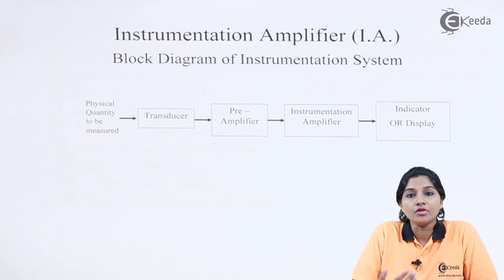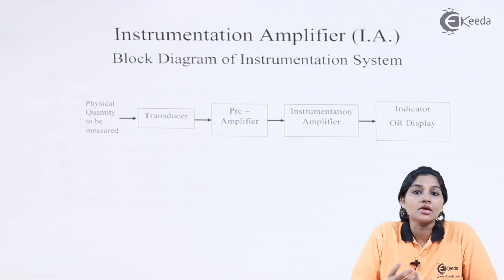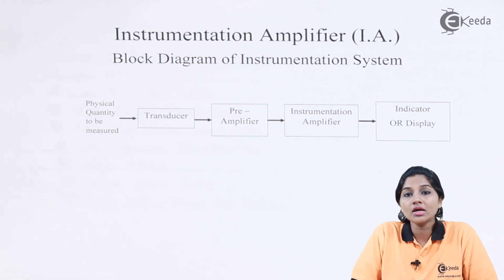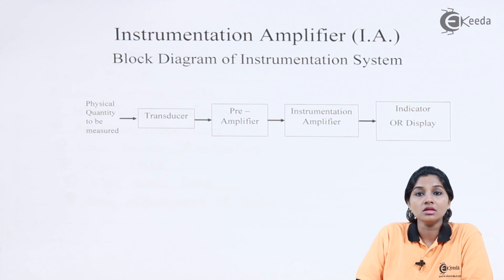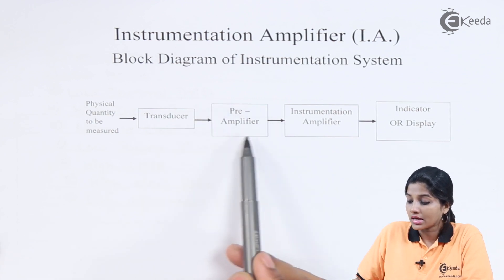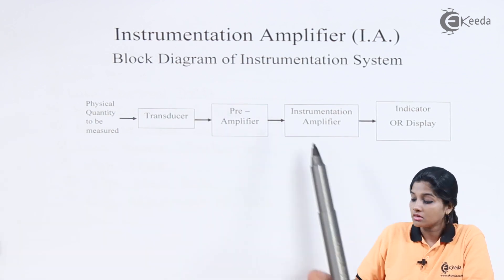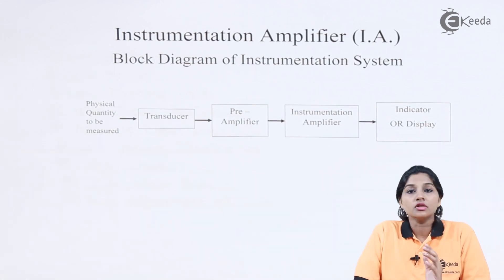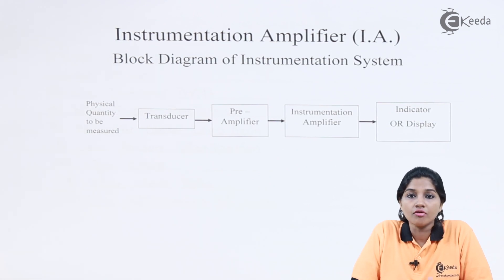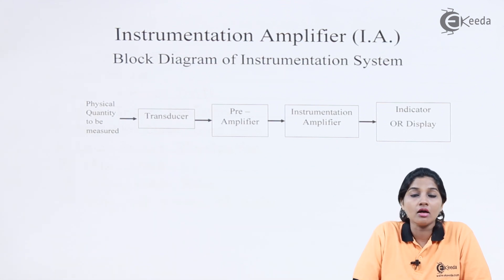The output of the transducer is not capable of driving the indicator or display present in the instrumentation system. Therefore, if we look at the block diagram of the instrumentation amplifier, it consists of a transducer used for the energy conversion process. Then the low level signal of the transducer is given to a pre-amplifier, which is the second block of the instrumentation amplifier. The pre-amplifier is basically a device which is used to convert the low level output obtained from the transducer into a level so that it can drive the instrumentation amplifier or an indicator or display present in the instrumentation system.